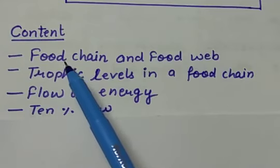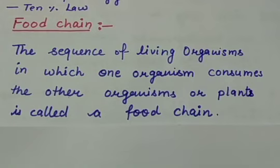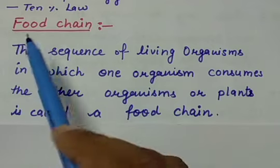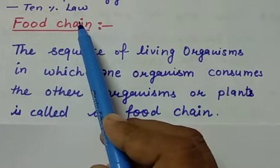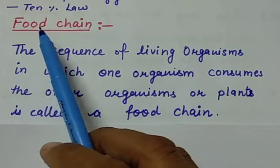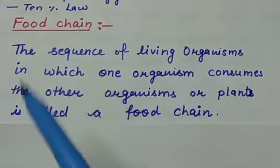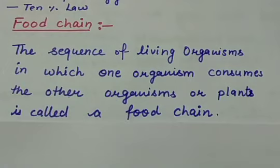Let us begin with our first topic, that is food chain. In an ecosystem there is an interconnection between the biotic and abiotic components for the flow of energy. Food chain and food web are two important processes through which the flow of energy and nutrients takes place.